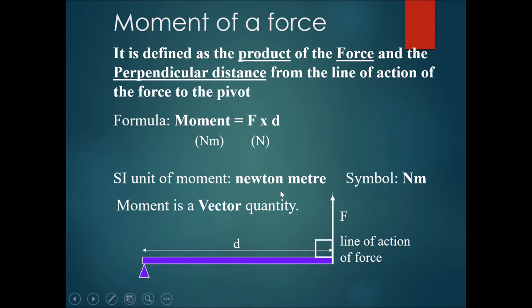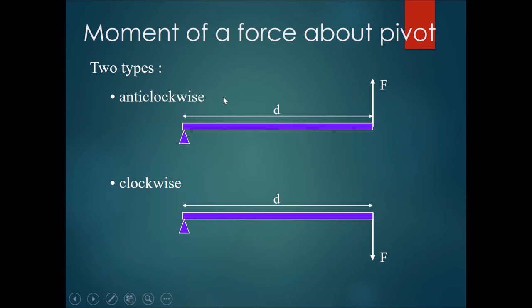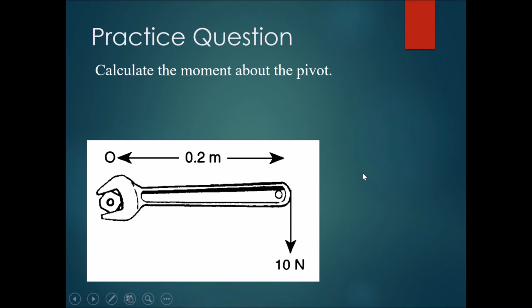The unit of moment is the Newton meter, symbolized as N·m. Moment is a vector quantity, meaning it has both magnitude and direction. The two possible directions of a moment about a pivot are either anticlockwise or clockwise. Now let's do a practice question: calculate the moment about the pivot — pause the video here and try it.